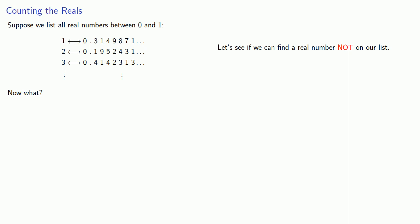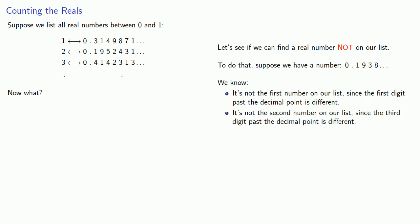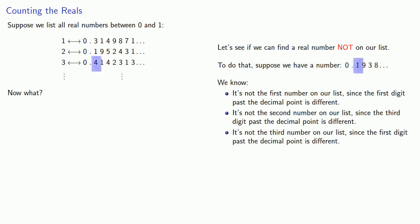How do we know a number's on our list? Suppose we have a number like this. We know that this number is not the first number on our list since the first digit past the decimal point is different. It's not the second number on our list — even though the first two digits are the same, that third digit past the decimal point is different. And it's not the third number on our list since the first digit past the decimal point is different. So we can determine which number this isn't by checking out the digits past the decimal point.